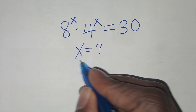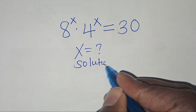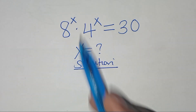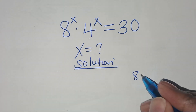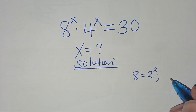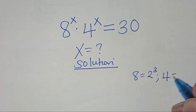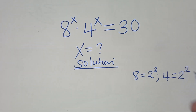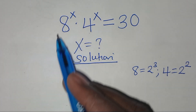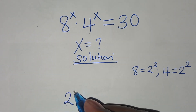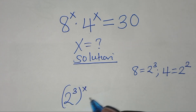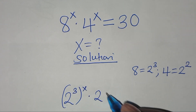For the solution, we can express 8 as 2 to the power 3, and we can express 4 as 2 to the power 2. Substituting this, we have 2 to the power 3, raised to the power x, multiplied by 2 to the power 2 raised to the power x.